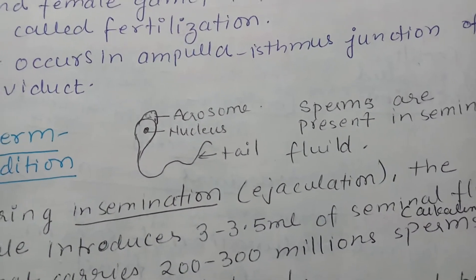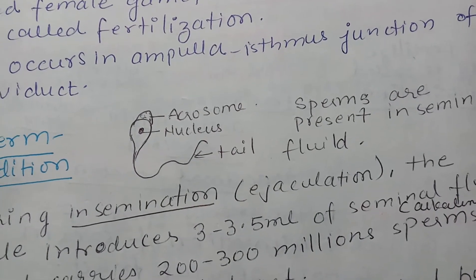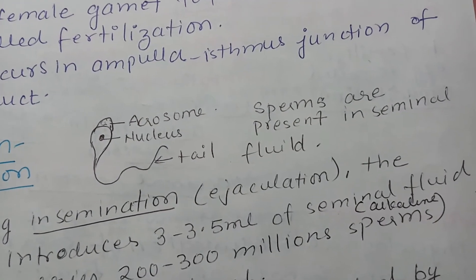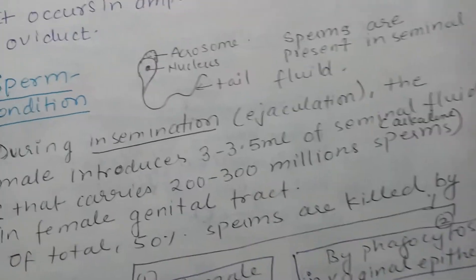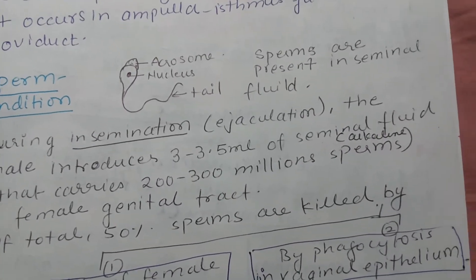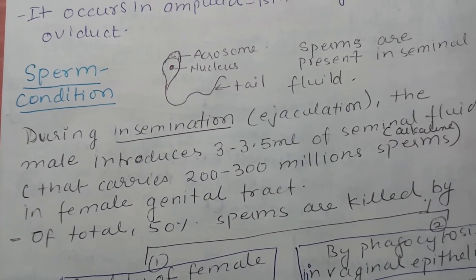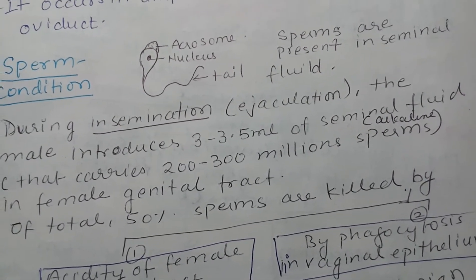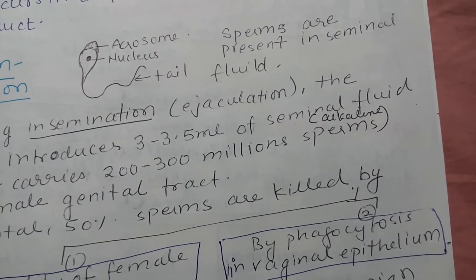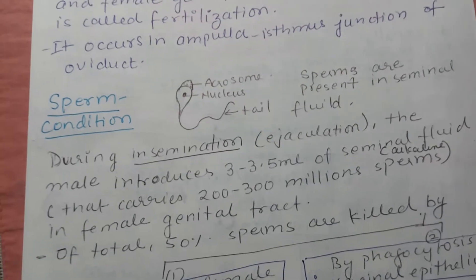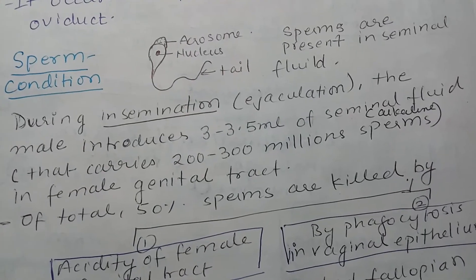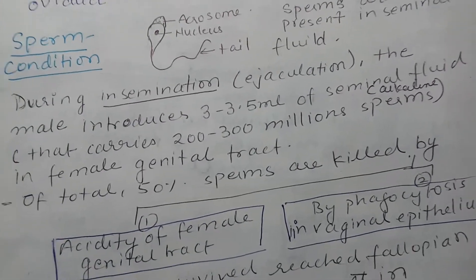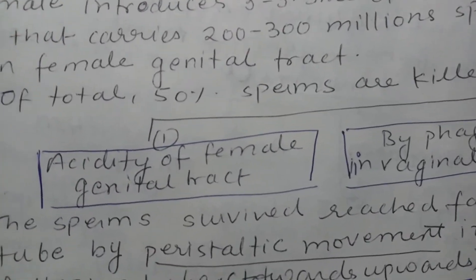The sperm consists of a nucleus and tail, and its head is called the acrosome, which is filled with enzymes. These sperms are present in the seminal fluid. During insemination or ejaculation, the male introduces 3 to 3.5 ml of seminal fluid that carries about 200 to 300 million sperm into the female genital tract.